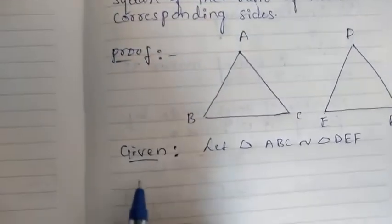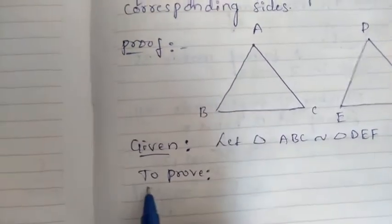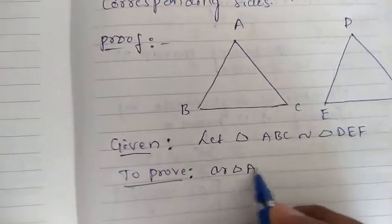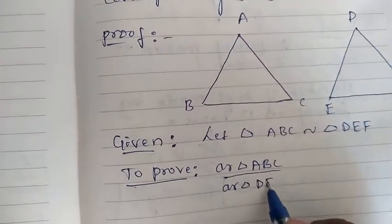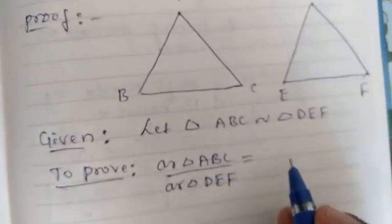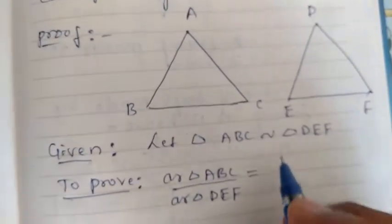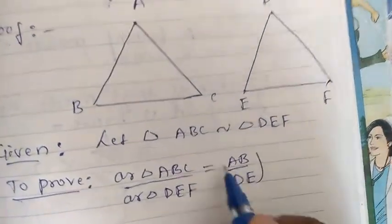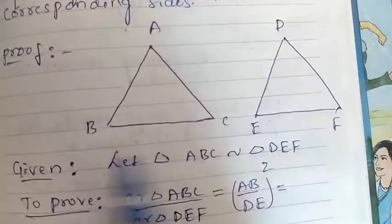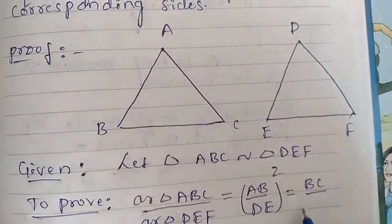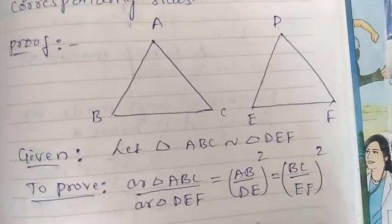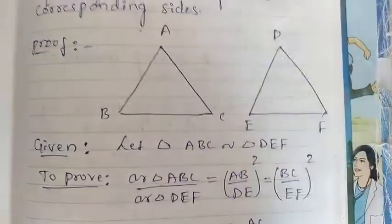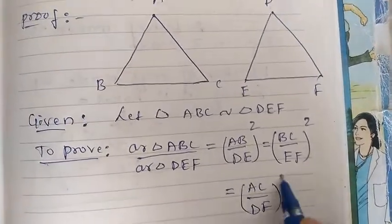Then what are you going to prove here? To prove: area of triangle ABC divided by area of triangle DEF is equal to the square of the corresponding sides. The corresponding sides means AB divided by DE, whole square, is equal to BC divided by EF, whole square, is equal to AC divided by DF, whole square. You are going to prove this one.